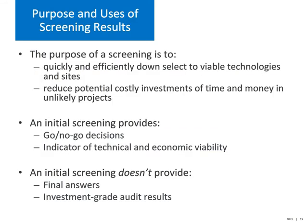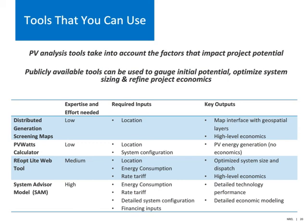To recap, the purpose of a screening is to quickly and efficiently down-select to viable technologies and sites, and to reduce potential costly investment of time and money in unlikely projects. An initial screening provides go-no-go decisions and indicators of technical and economic viability, but does not provide final answers or investment-grade audit results. PV modeling and analysis tools can help evaluate your site's potential, taking into account all the factors discussed today. Listed here are four tools that can be used to gauge initial potential, optimized system sizing, and refined project economics — they vary in the expertise needed, inputs required, and key outputs provided. Today, we're going to take a closer look at REAP Lite, a free-to-use web tool recently released by NREL.